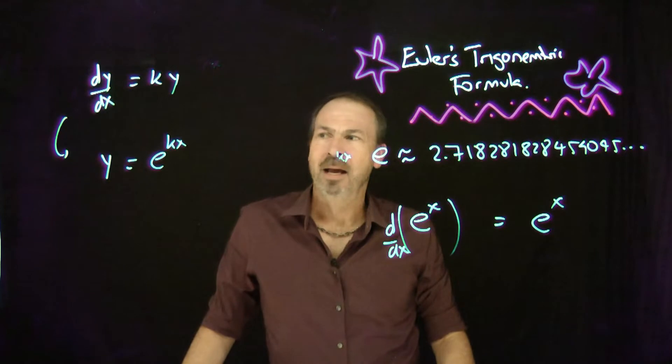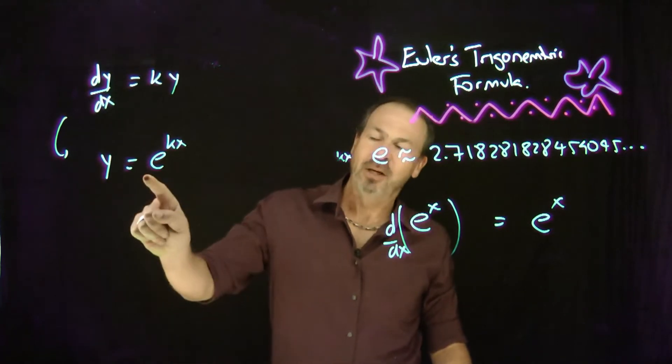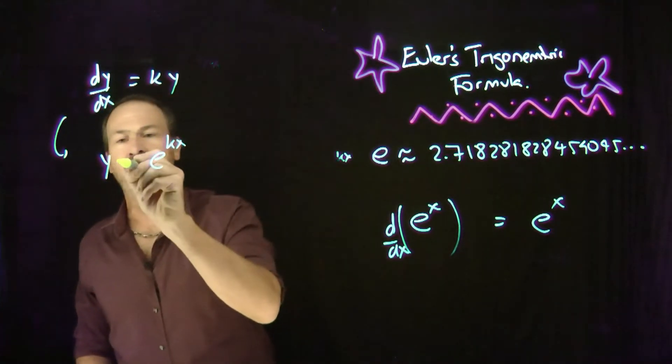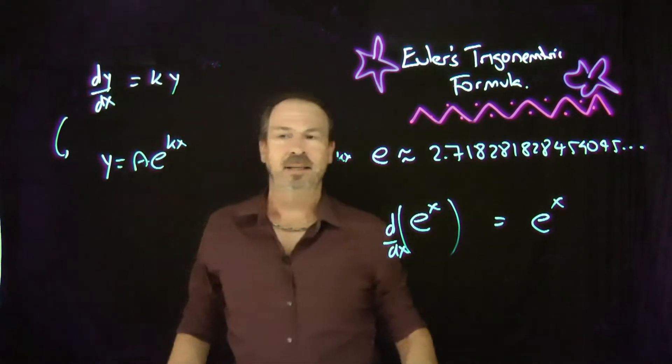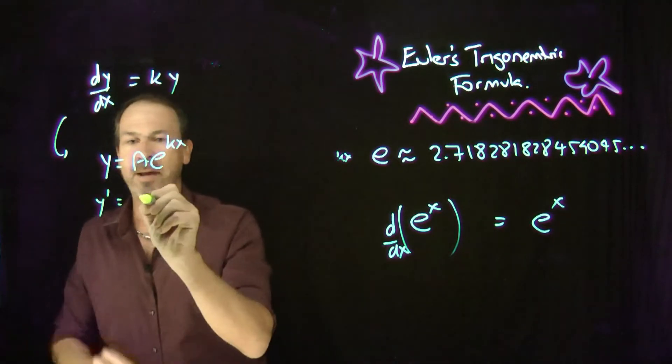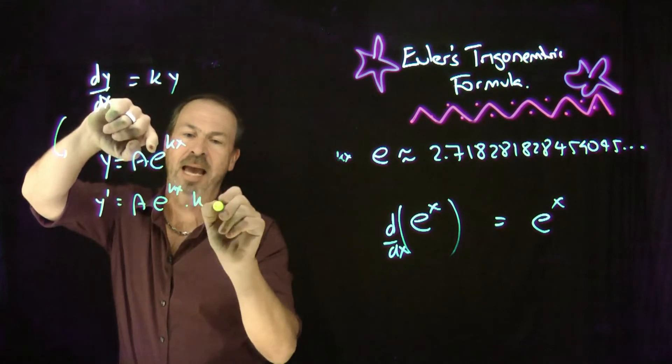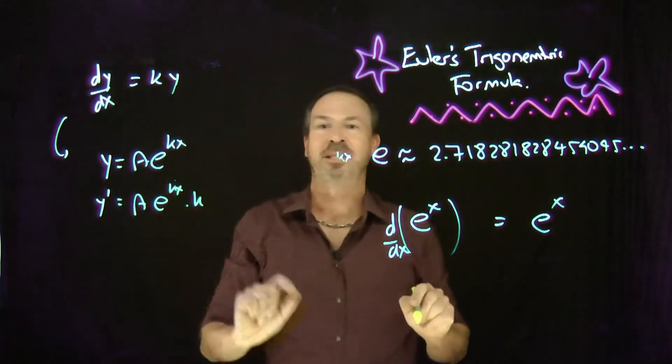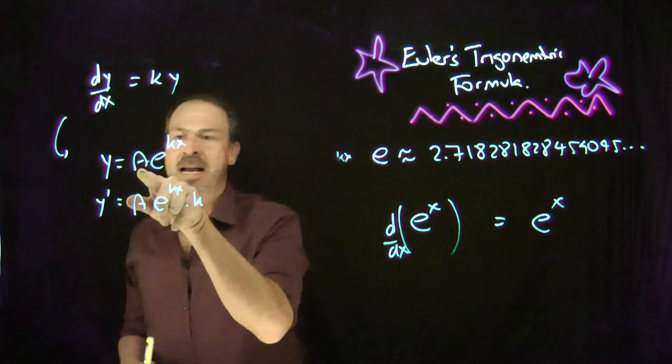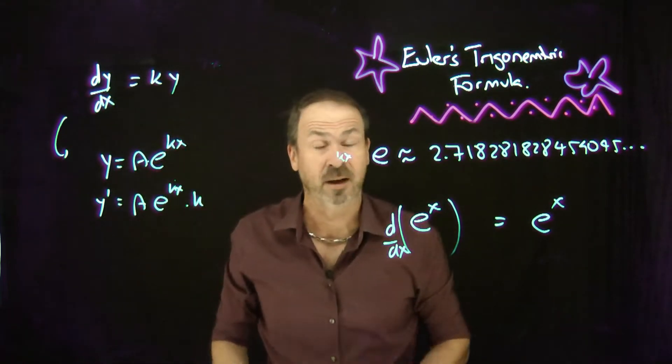I could actually multiply this by another constant. For example, I could do a times e to the kx. In fact, check. The derivative of this would be a goes along for the ride, e to the kx, times the derivative of what's inside, k. Oh yeah, it is indeed k times itself. So there are actually infinitely many answers. You can put different constants in front of this function.